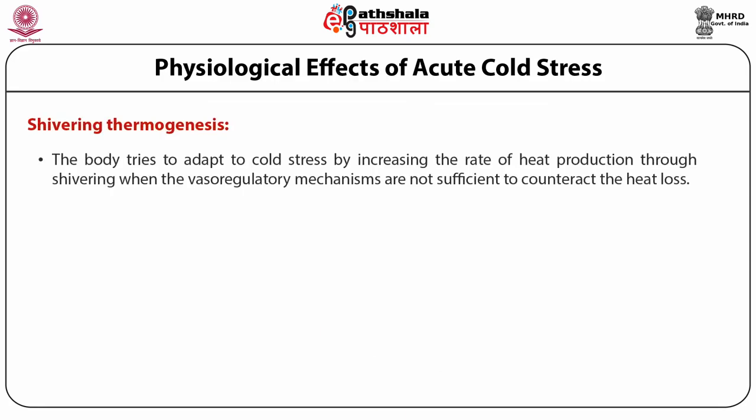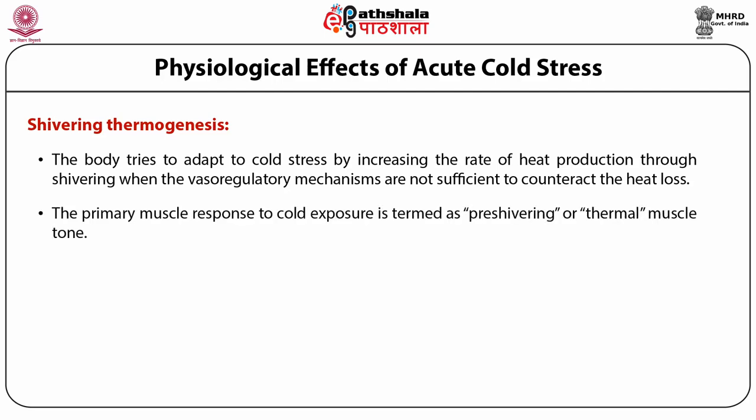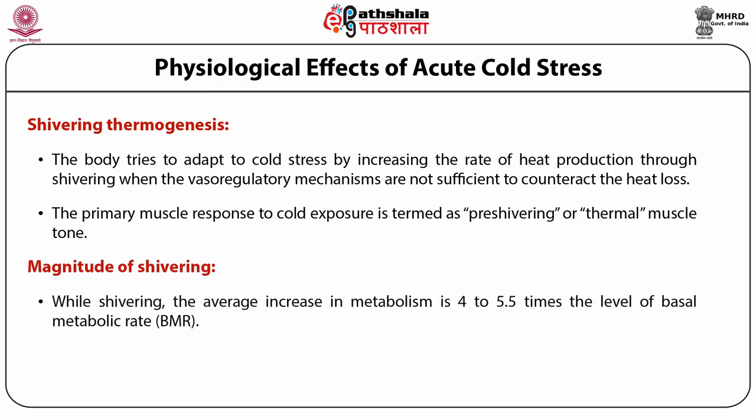Shivering thermogenesis: the body tries to adapt to cold stress by increasing heat production through shivering when vasoregulatory mechanisms are insufficient to counteract heat loss. Shivering refers to involuntary contractions of skeletal muscles throughout the body to regulate heat production during cold exposure. The primary muscle response is termed pre-shivering or thermal muscle tone. Both pre-shivering and shivering contractions appear first in the extensor muscles of upper limbs and trunk, followed by extremities. While shivering, the average increase in metabolism is 4 to 5 times the basal metabolic rate (BMR).